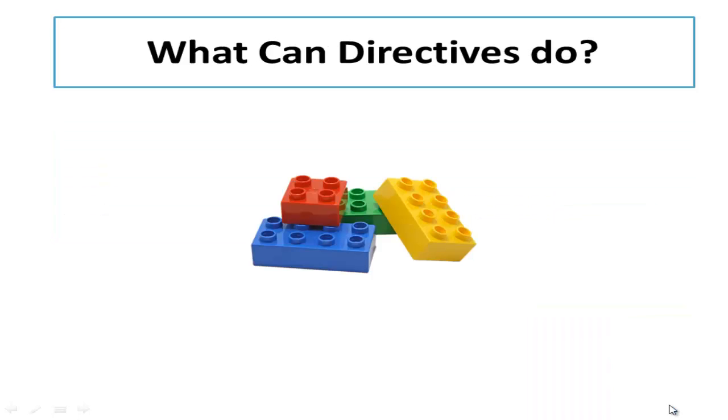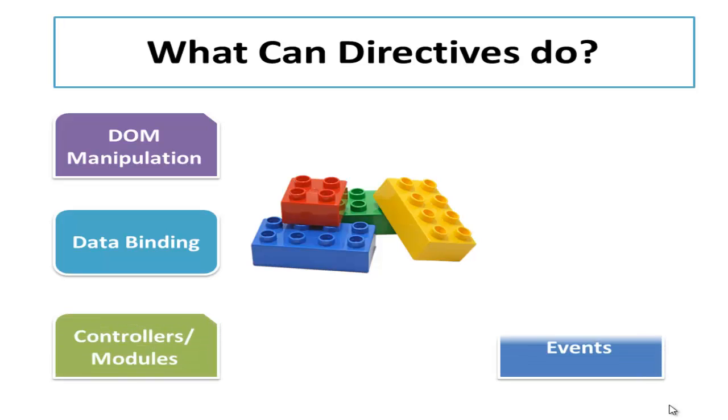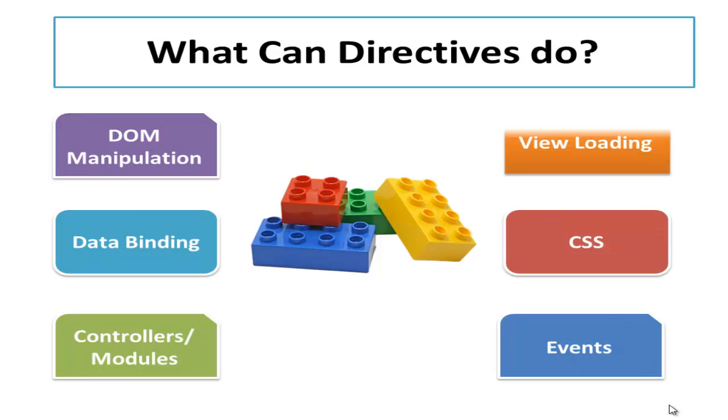Now you can think of directive as a little block that can be put together to perform a lot of different operations and to build an application. They can do all kinds of things like DOM manipulation, data binding, we can refer our controllers and modules using directives, handling events, modify CSS, and even you can decide where the view will load into the shell page. So there are lots of different things you can do with directives, and I have just mentioned some key areas where we use directives.